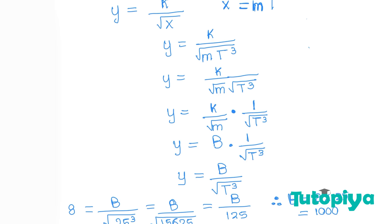To solve for t, first square both sides to remove the square root: t cubed equals (1000/27) squared. Then cube root both sides to remove the cube: t equals the cube root of 1000 squared over the cube root of 27 squared. Cube root of 1000 is 10, so 10 squared is 100; cube root of 27 is 3, so 3 squared is 9. Therefore t equals 100 over 9.